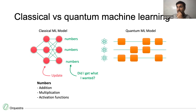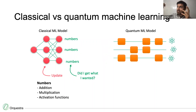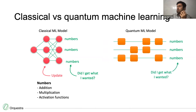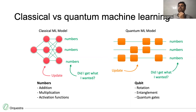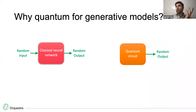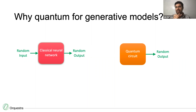A quantum machine learning model is the same thing, except instead of numbers you have qubits. The qubits go through the quantum network, operate on each other, and then you get numbers out. You check if the numbers match what your data tells you, and if not you update the parameters — not with addition or multiplication, but with rotations, entanglement, and quantum gates.